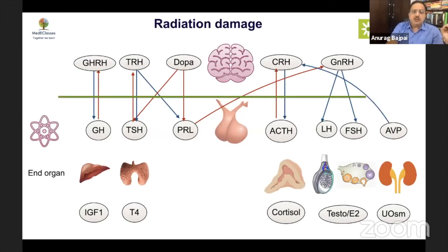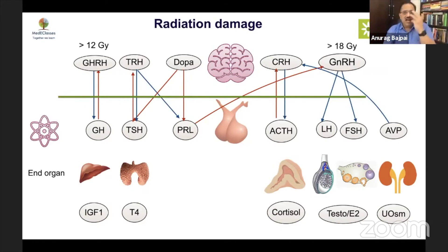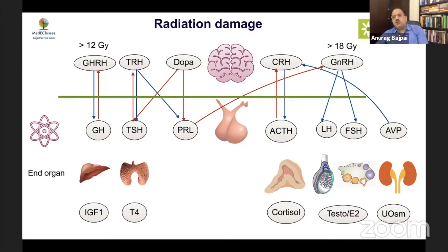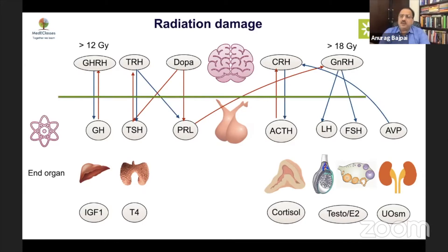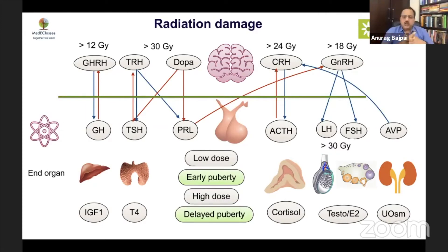Radiation damage is important to identify because it has maximum effect on the hypothalamus. The GHRH axis goes first with minor doses — around 12 Gy — making growth hormone deficiency the first radiation-induced hormone deficiency. There can be precocious puberty beyond 18 Gy, which may mask GHD because precocious puberty pushes growth velocity. Hypothyroidism is the other condition that can mask GHD. As dose increases, there are effects on cortisol, thyroid, and eventually delayed puberty — a whole spectrum of radiation sensitivity.